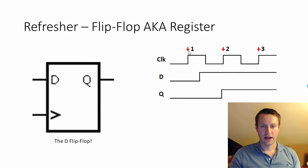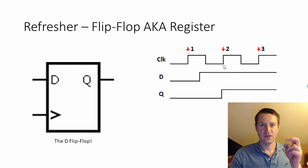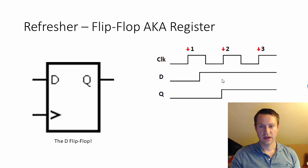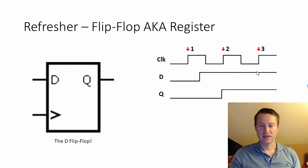If you look here on clock rising edge 1, D is low, Q goes low. Between edges 1 and 2, D goes high, but the flip-flop doesn't see that effect until rising edge number 2, which happens here. Once rising edge number 2 happens, Q goes high — these should be pretty much aligned at the same time. And then on rising edge 3, D is high, Q stays high.